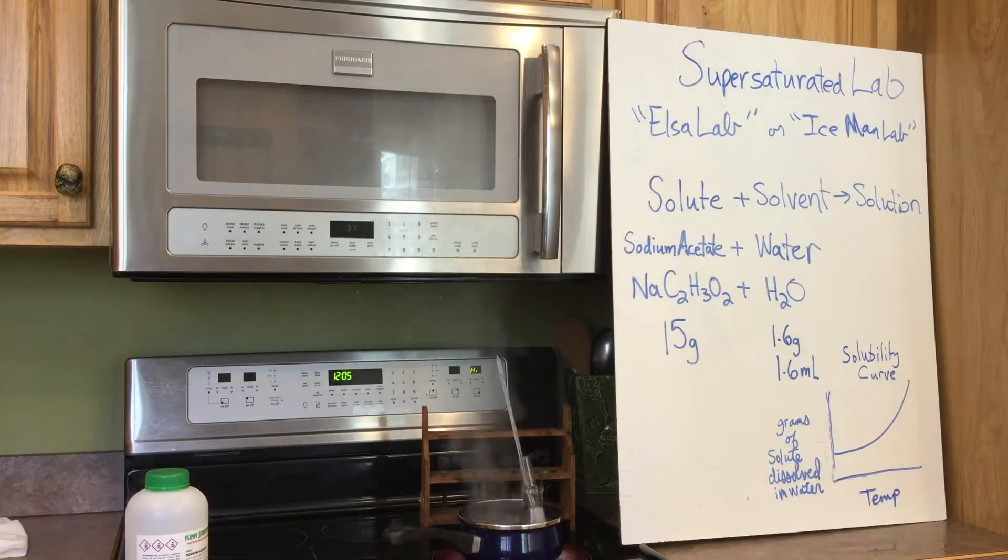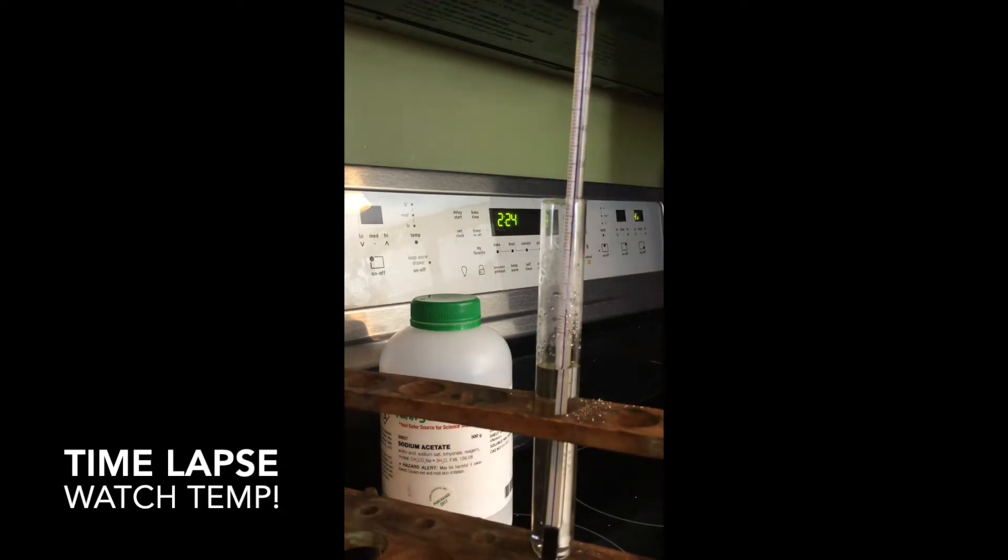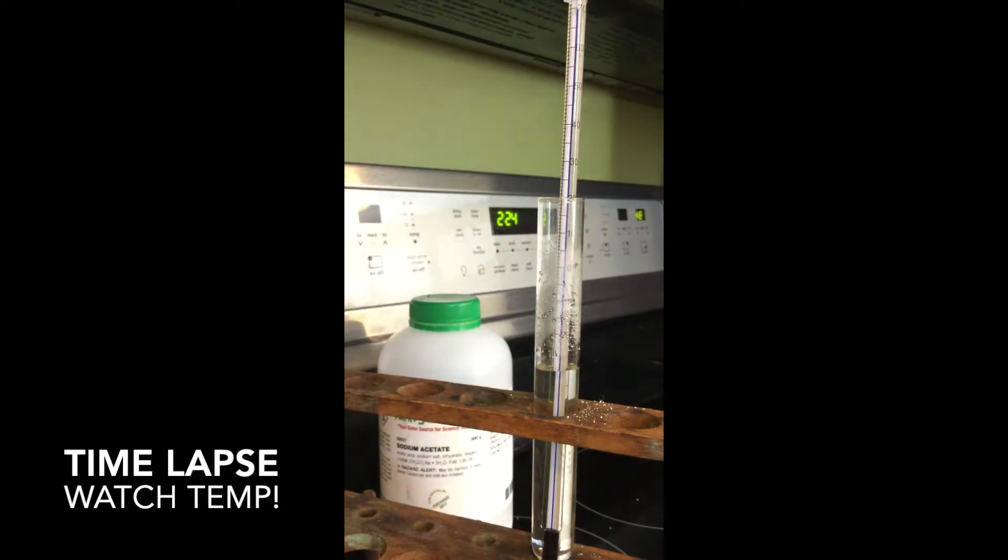Now I've set up a water bath to try to heat this solution up. As it got warmer, all of the sodium acetate dissolved and we're left with a clear solution. Now as I move it over to the test tube rack, you can't see the starting temperature, but it actually started at about 80 degrees. Now we're going to let it sit there and let it slowly cool down and see what it looks like at the end.